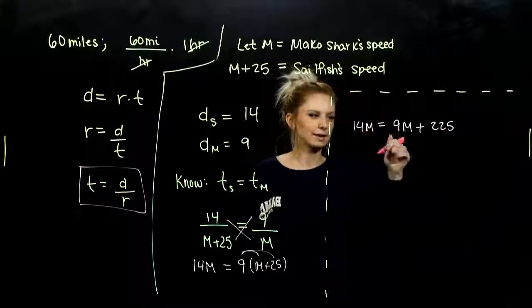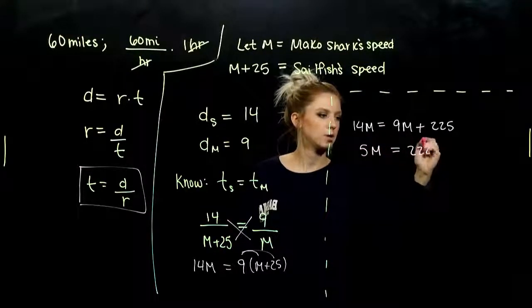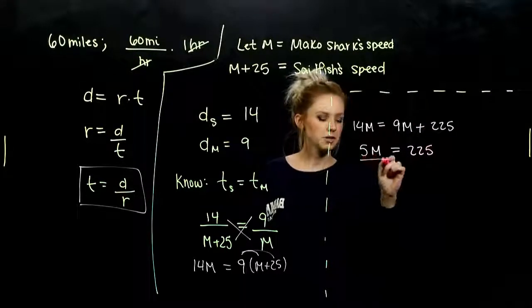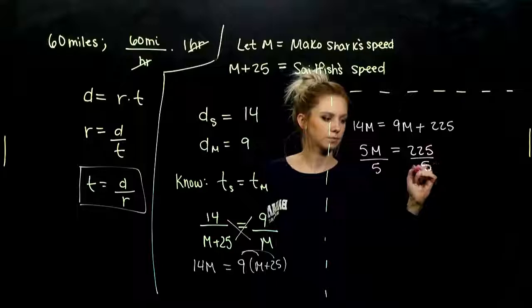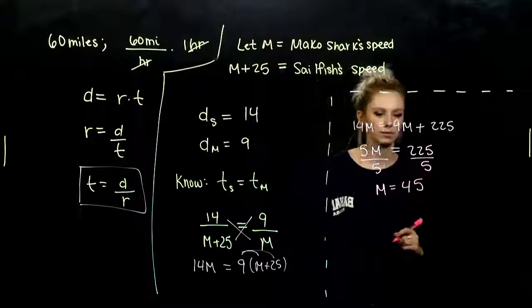So I'm going to subtract 9 from both sides. I'll have 5 factors of M being equal to 225. And when we do that division, what do we get out? M is 45.